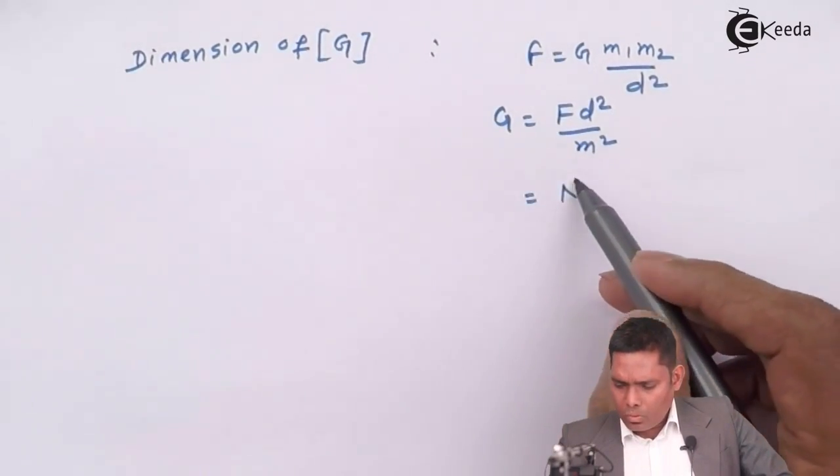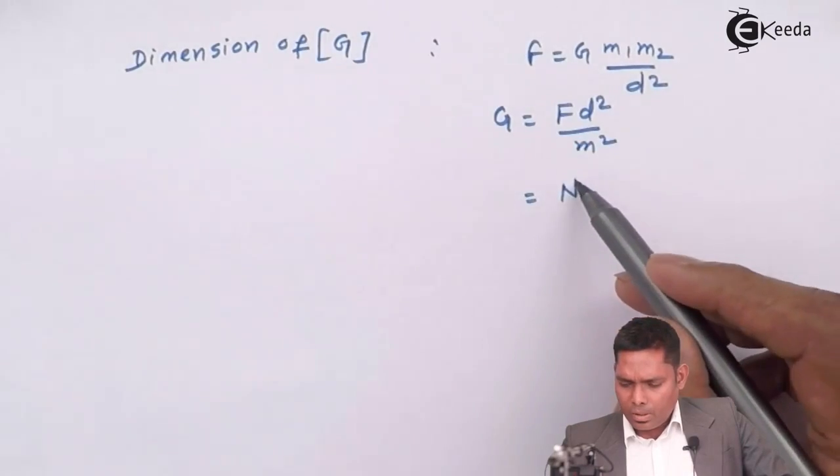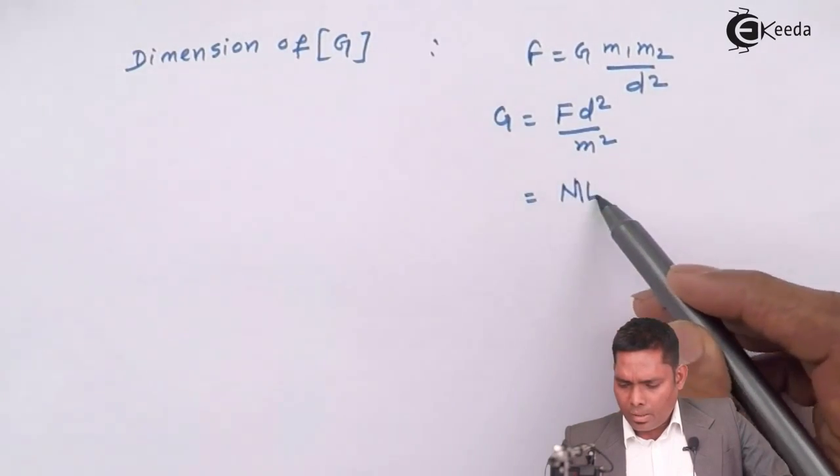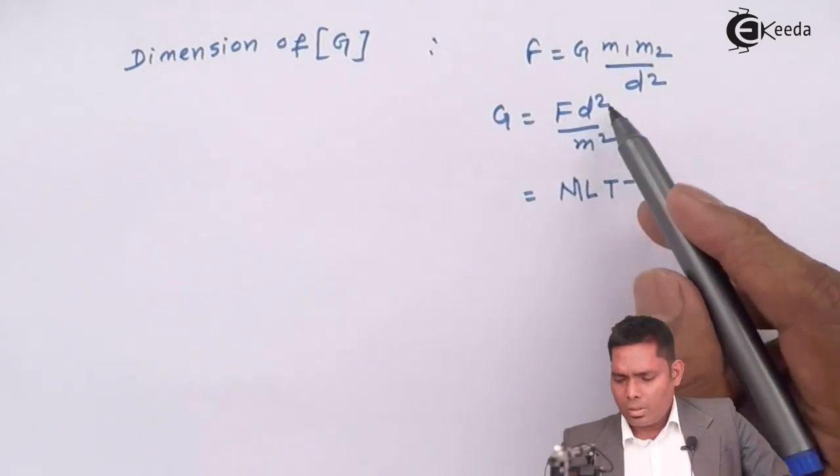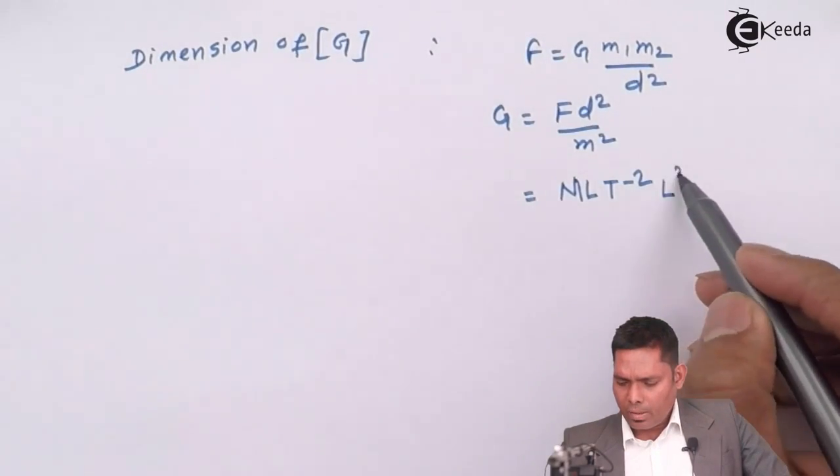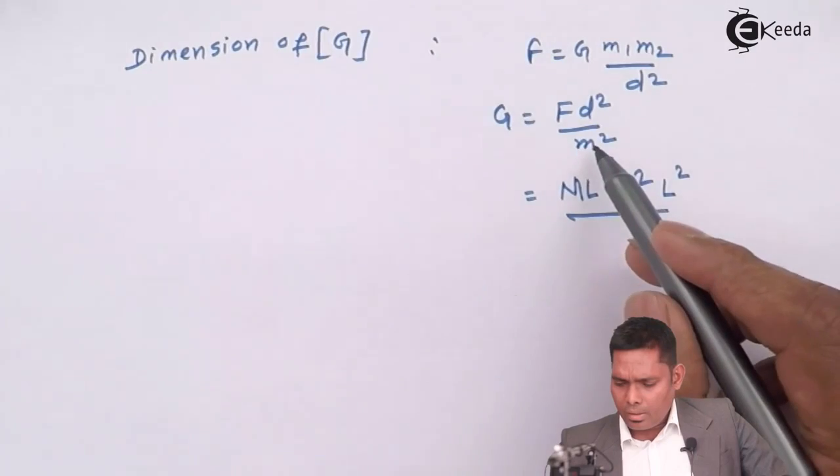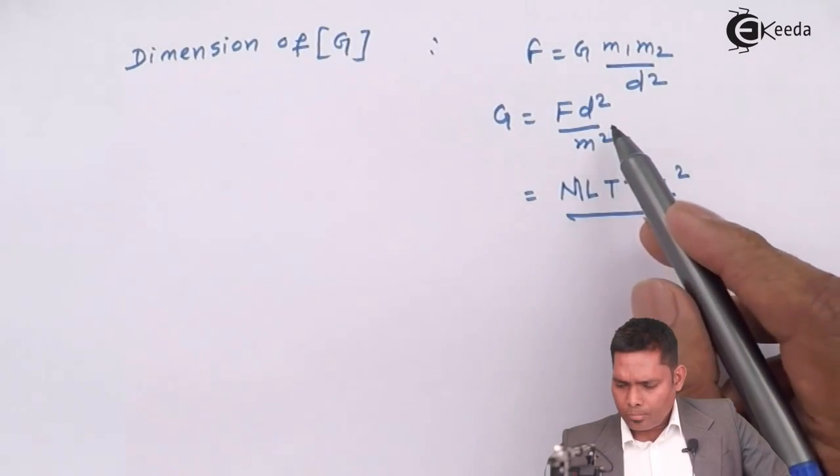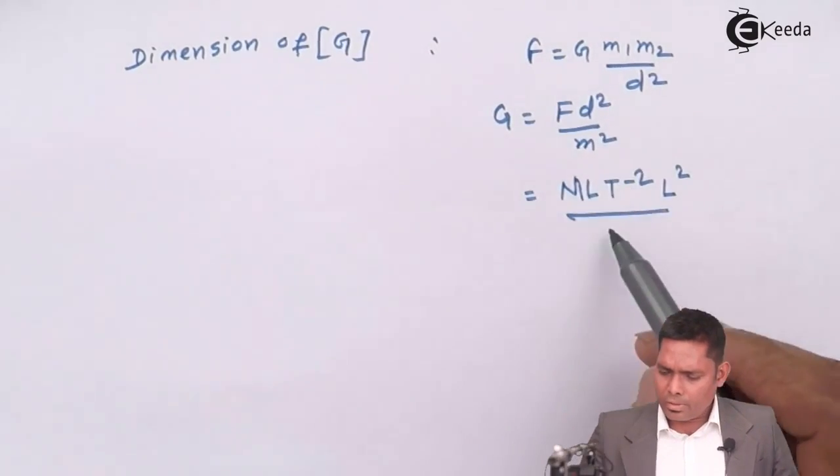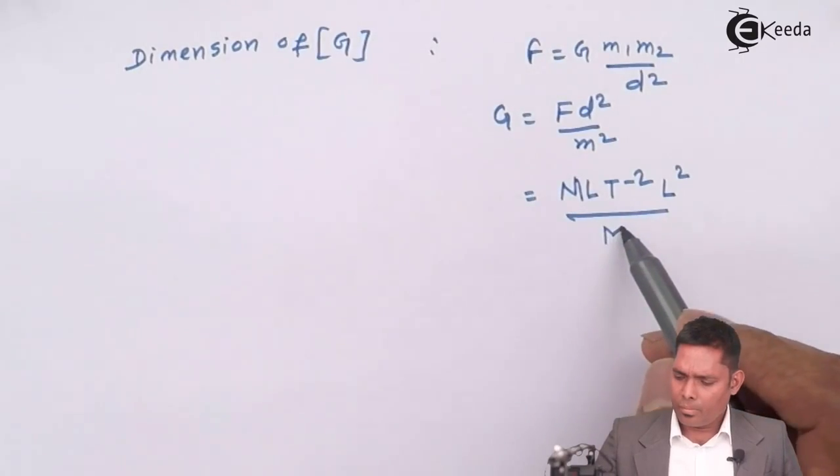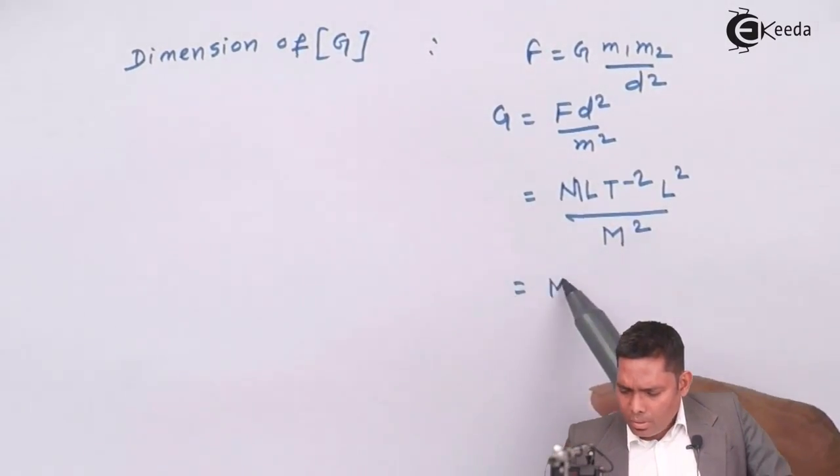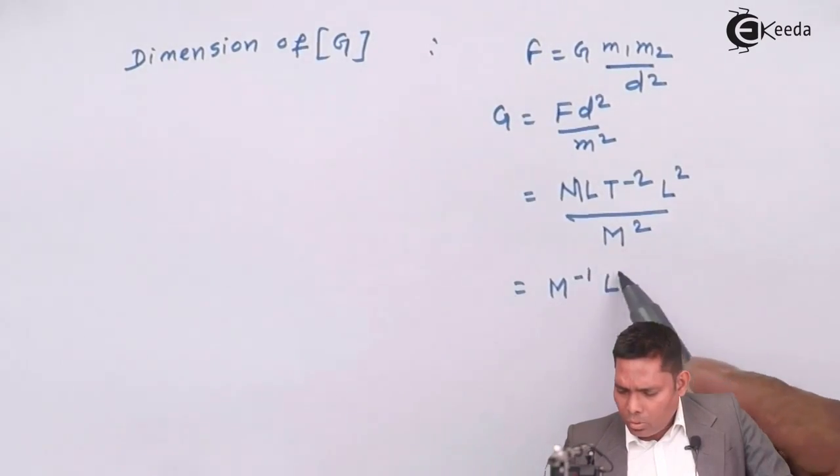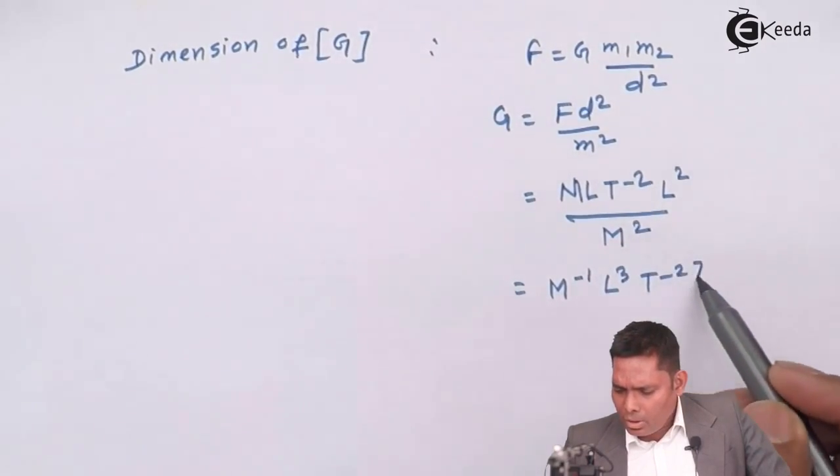F is Newton. That means its dimension is M L T minus 2 for force. D square is L square. And this is mass square is M square.